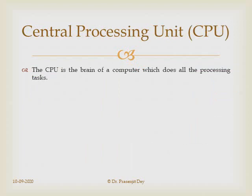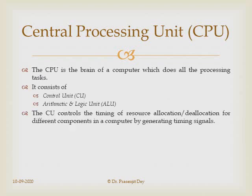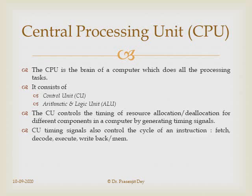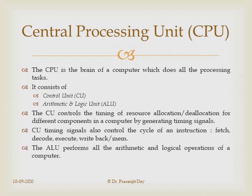The CPU is the brain of a computer which does all the processing. It consists of a control unit and ALU. The control unit controls the timing of resource allocation and deallocation for different components by generating timing signals. The control unit also controls the execution of an instruction, which consists of fetch, decode, execute, and write back or memory. The ALU performs all arithmetic and logical operations.